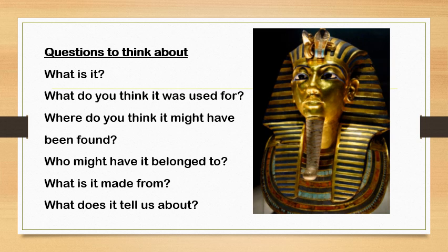OK, this is an artefact — a picture of an artefact here. And I want you to think about: what is it? What do you think it was used for? Where do you think it might have been found? Who might it have belonged to? What is it made from? And what does it tell us about? Think about some of the things we've already spoken about in our history lessons and what happened on your timeline from last lesson. Just pause for a minute and have a think about any of those questions.